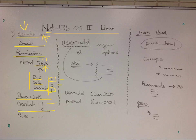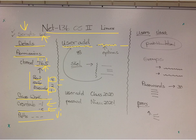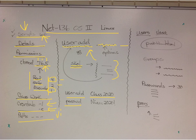For classwork, you can look at your Chrome tab and edit it — you need to have some ability in VI. Make sure you consider your paths inside your Chrome tab. For user add, we have options and then you add the username. If you use a skeleton directory, however you build it, it will be added to the user that you create. We did an example: useradd class2020, password NIAC 2020 with an exclamation point.